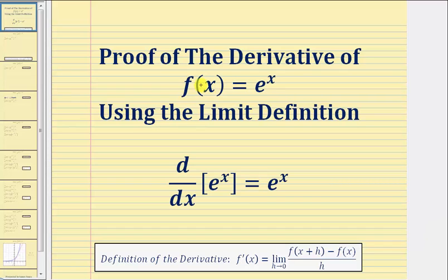Welcome to a proof of the derivative of f of x equals e to the x. We'll be using the limit definition of the derivative to prove that the derivative of e to the x with respect to x equals e to the x, which is really quite amazing. This function is its own derivative.